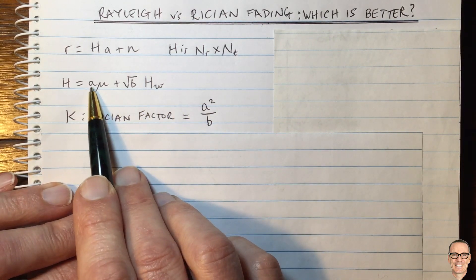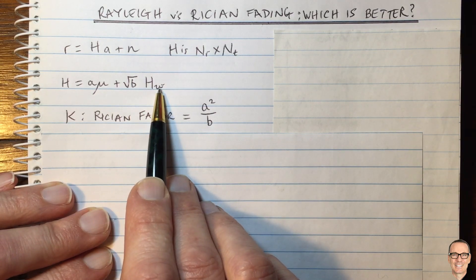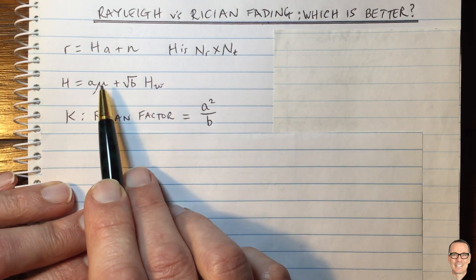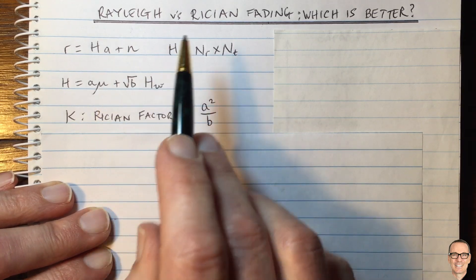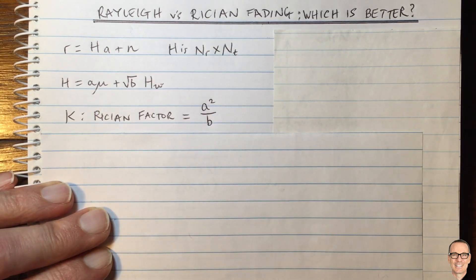And this is a common model where H omega is an IID channel component. So if A equals zero, then we would just have a Rayleigh channel. And when A does not equal zero, we've got the dominant line of sight, which is the Ricean component.